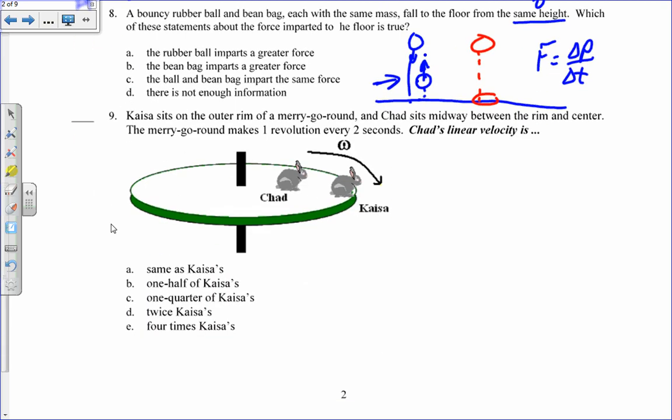Kaiza sits on the outer rim of a merry-go-round. Chad sits midway. His linear velocity is what? It's one half. I know that v is equal to omega r. Because it's a rigid body, they both have the same omega. Chad has half the radius of Kaiza, so he has half the velocity. That's b for number nine.